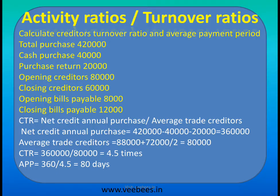Average trade creditors include both creditors (opening and closing balance) and bills payable (opening and closing balance). Opening creditors is 50,000 and opening bills payable is 50,000, giving a combined opening figure of 78,000.